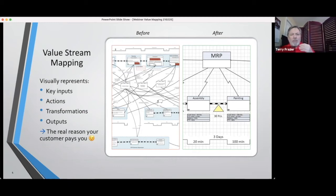A value stream map is at its core just a process map, but it's built from the perspective of the customer and it's an overview process. We'll talk to companies, talk to the people within the companies.